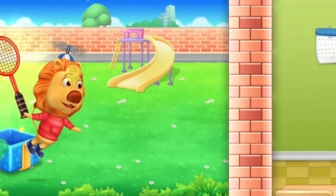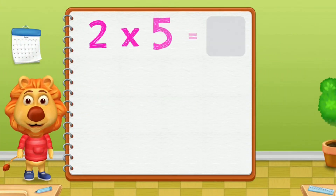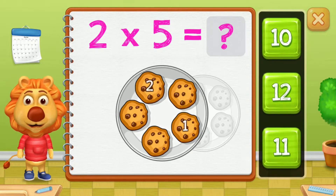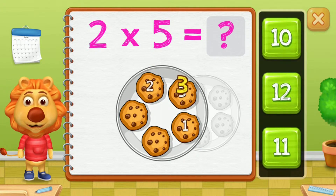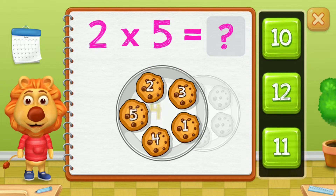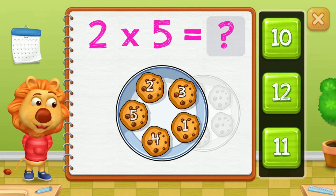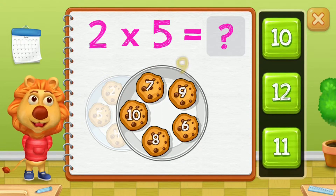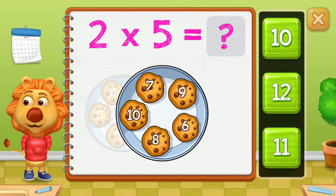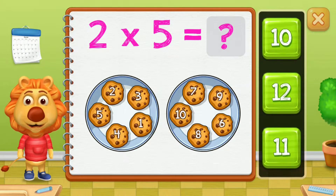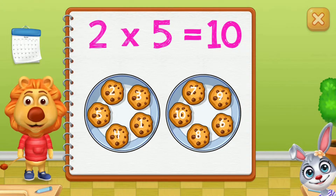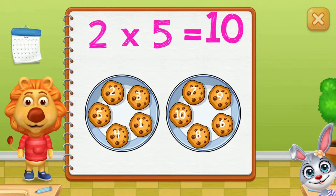One, two, three, four, five, six, seven, eight, nine, ten. Two groups of five equals ten.